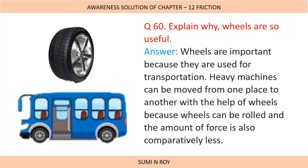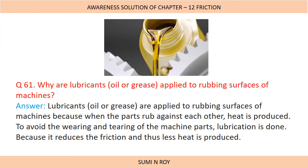Next question: Explain why wheels are so useful. Wheels are important because they are used for transportation. Heavy machines can be moved from one place to another with the help of wheels, because wheels can be rolled and the amount of force required is comparatively less. Next question: Why are lubricants applied to rubbing surfaces of machines? When machine parts rub against each other, friction produces heat. To avoid wearing and tearing, lubrication is done. The lubricant fills up the irregularities between the surfaces, making the machine parts smooth, so there is less friction and less heat produced, protecting the rubbing surfaces.